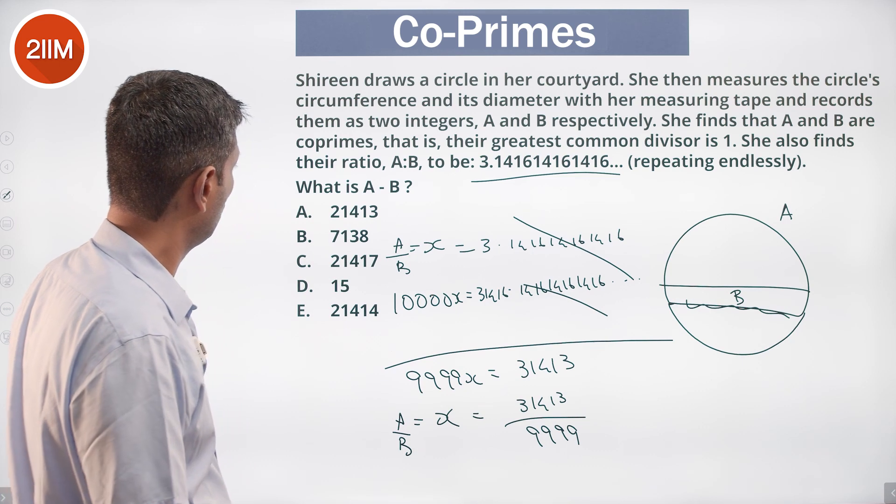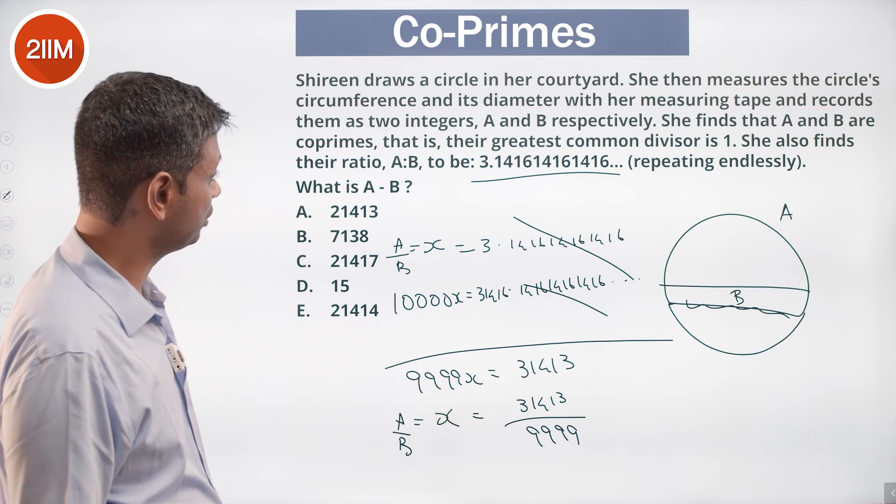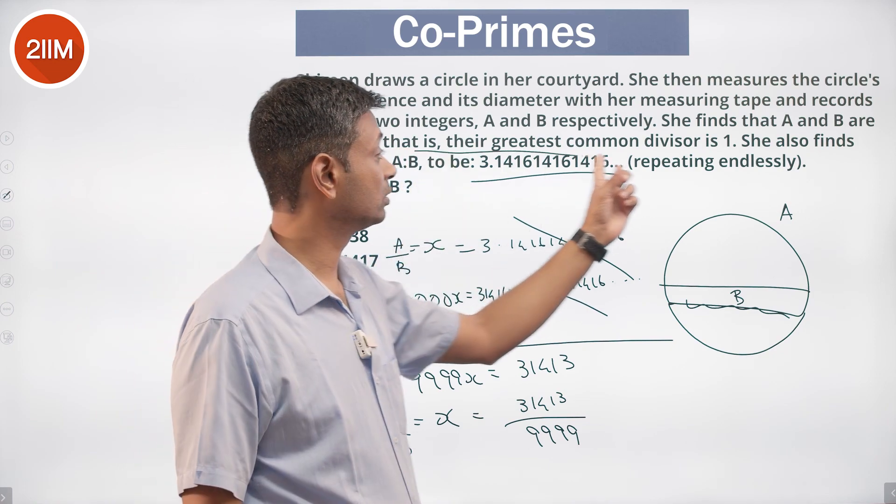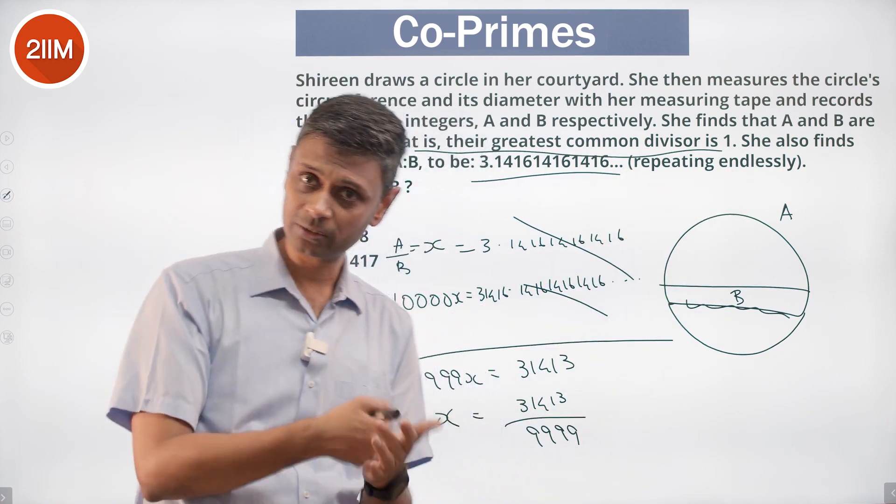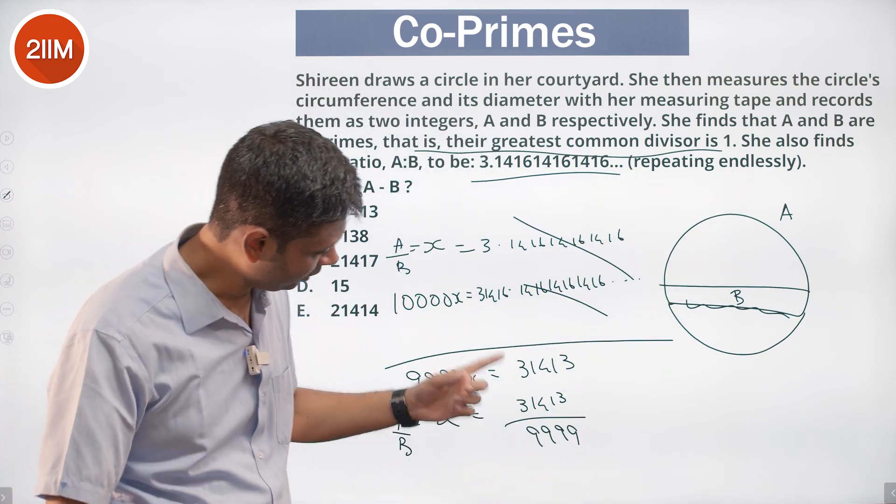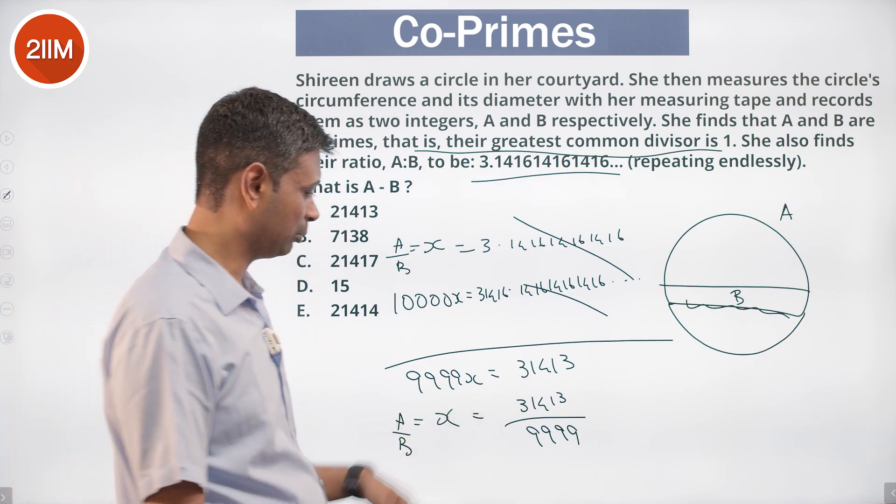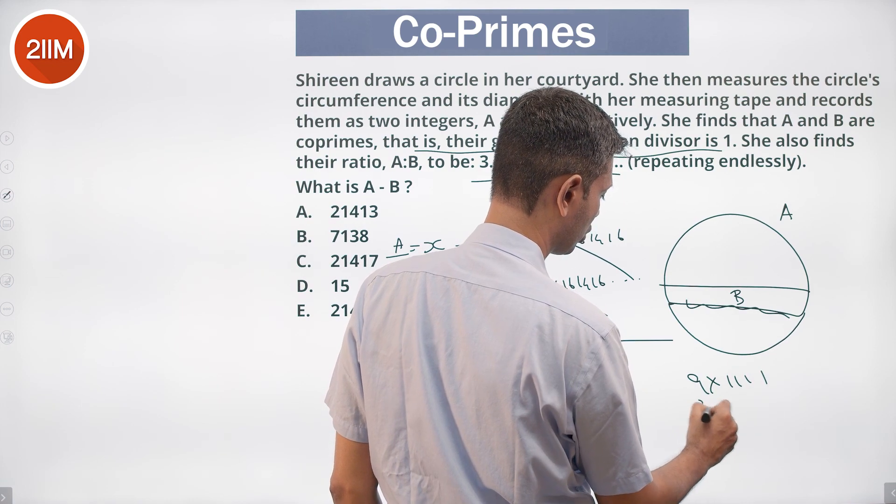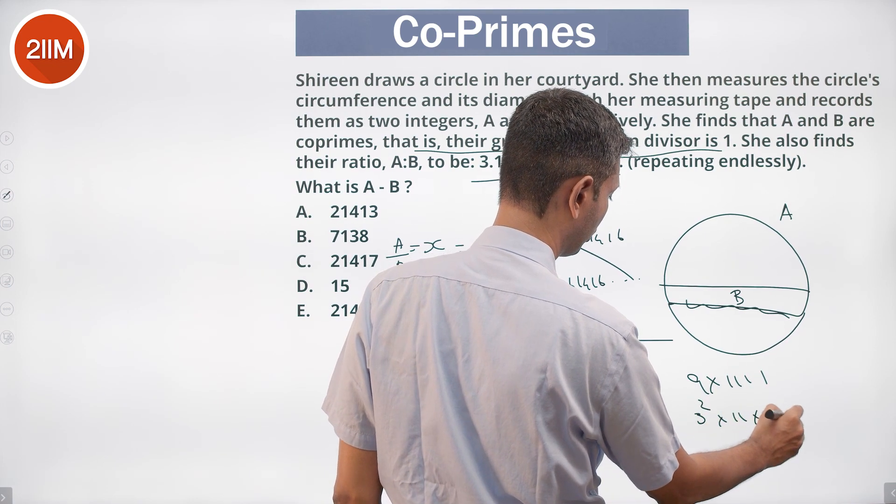What is A minus B? Subtract this from this. But their greatest common divisor is 1, we have to simplify this fraction. This is a multiple of 9 and a multiple of 1111, which is 3 squared into 11 into 101.